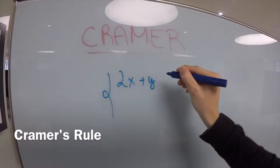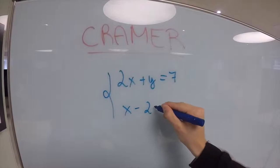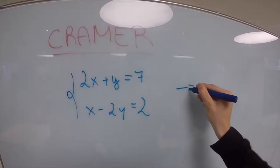Let's start with Cramer. Our system of equations is 2x plus y equals 7 and x minus 2y equals 2.